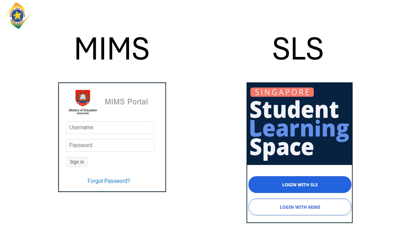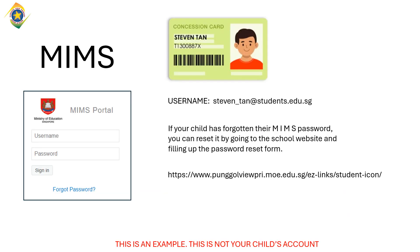Your child has two accounts that they can use: the MIMS account and the SLS account. The MIMS username is your child's email address. The email address uses the full name of the student, but please check with the form teacher for the actual email address, as it may vary.